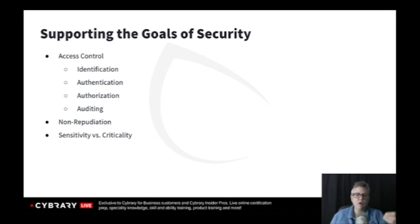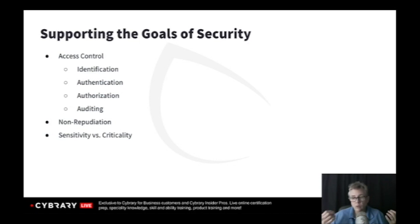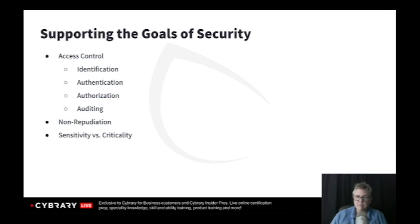So Kelly wants to print to a printer, wants to access a share. The first thing she should have to do is identify herself and say, 'I'm Kelly.' Then, prove it. Because when we get into the risks associated with information security — spoofing, social engineering — identities can be spoofed. So show me something, tell me something, indicate something that proves your identity.